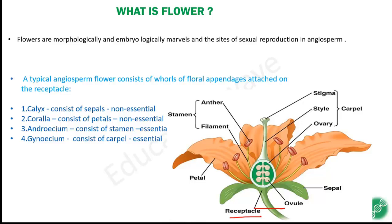The green stalks are attached to the receptacle. There are four parts: the first one is calyx, the second is corolla, the third is androecium, and the fourth is gynoecium. Calyx consists of sepals — the green leaf-like structures. They are called calyx and they are non-essential.